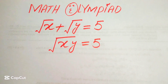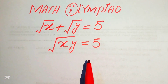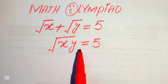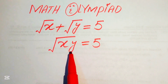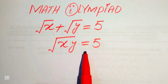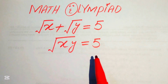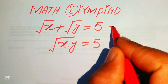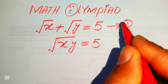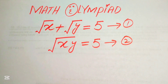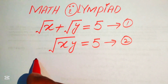Hello everyone, welcome. We solve this nice math olympiad algebra problem. We have square root of x plus square root of y equals 5, which we call equation number 1, and square root of xy equals 5, which we call equation number 2. We solve this problem for the values of x and y.